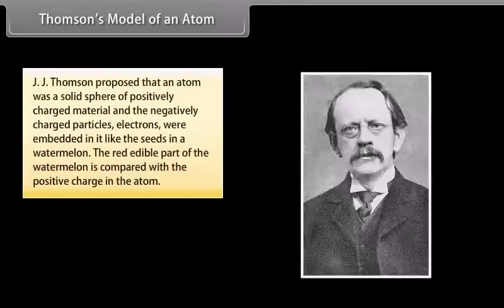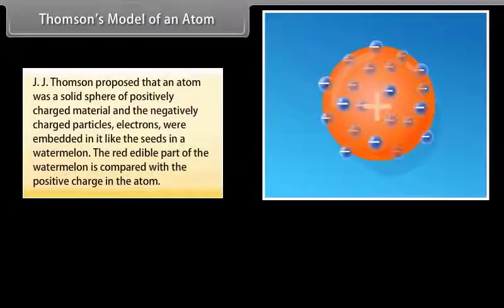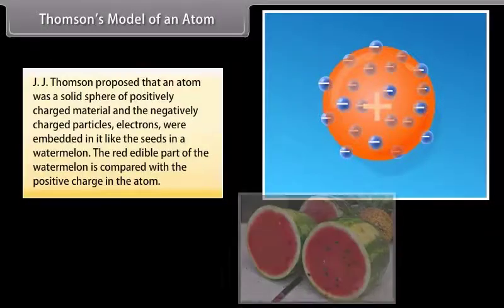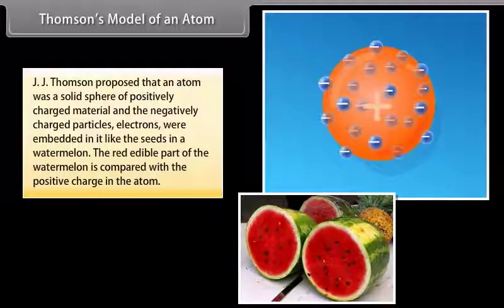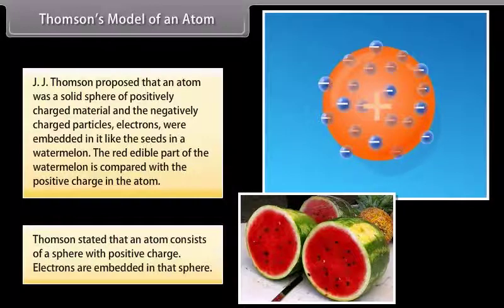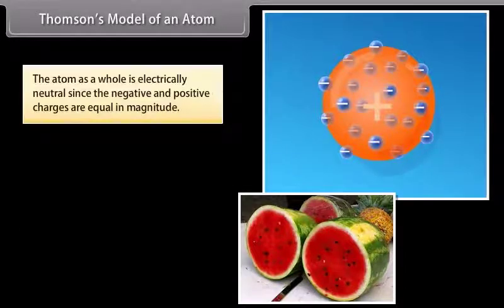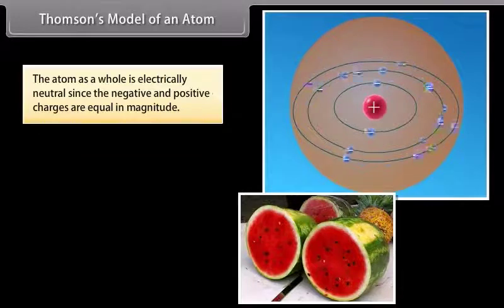Thomson's Model of an Atom: J.J. Thomson proposed that an atom was a solid sphere of positively charged material, and the negatively charged particles — electrons — were embedded in it like the seeds in a watermelon. The red edible part of the watermelon is compared with the positive charge in the atom. Thomson stated that an atom consists of a sphere with positive charge and embedded electrons, making the atom as a whole electrically neutral since the negative and positive charges are equal in magnitude.